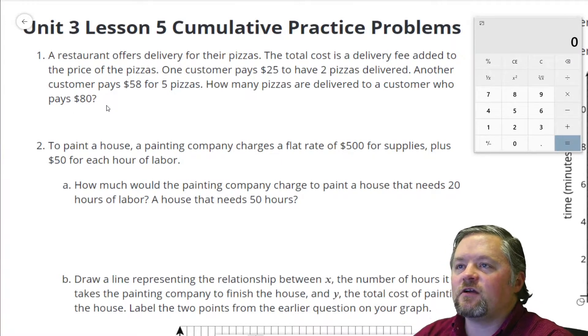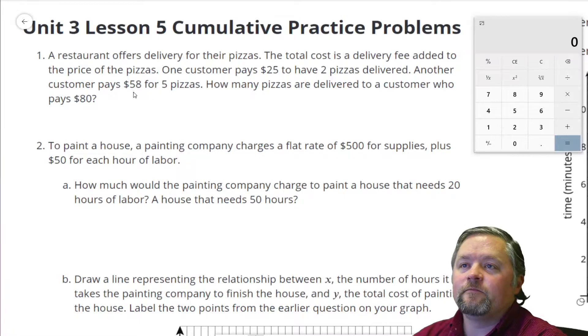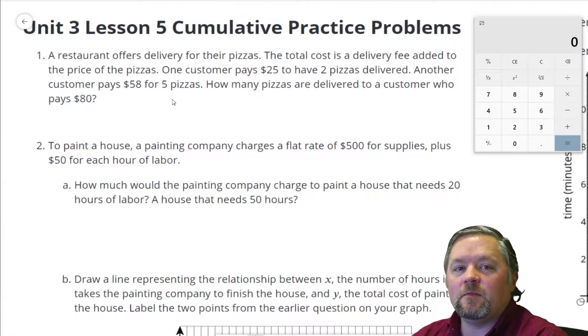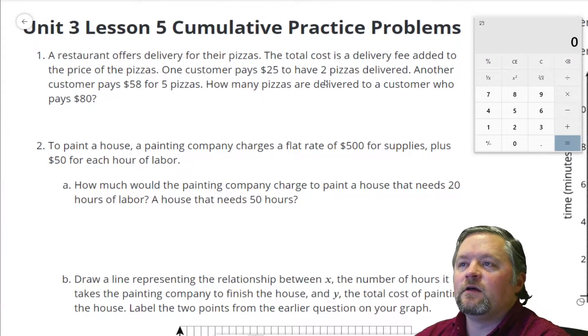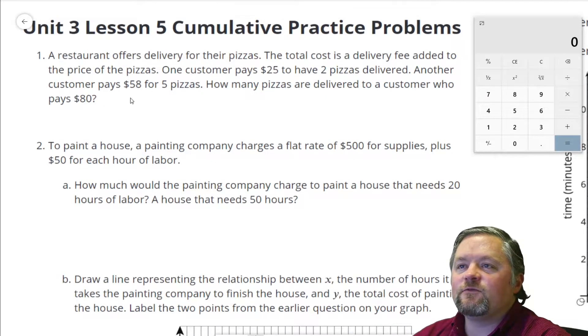So let's start out by finding out what our unit rate is. We know we paid $25 for two pizzas, but part of that's the delivery. We know we paid $58 for five pizzas, but part of that's the delivery. But the difference between those was three pizzas.